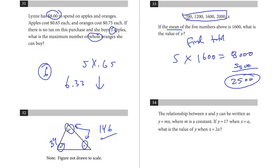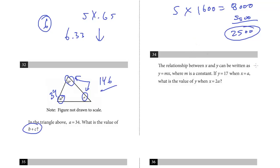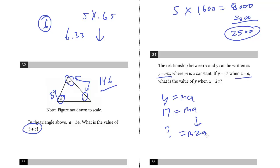Last question on this page — let's take a look at 34. The relationship between X and Y can be written as Y equals MX, where M is a constant. If Y equals 17 when X equals A, what is the value of Y when X equals 2A? These two variables are directly proportional. We don't know the constant, but it doesn't matter. Y equals M times A, and when X equals A, Y is 17. Now if X becomes 2A, both sides are doubled, so the answer is simply 34 — another pretty straightforward question.